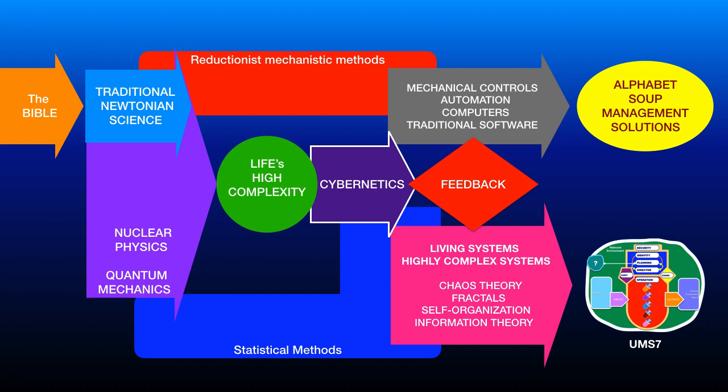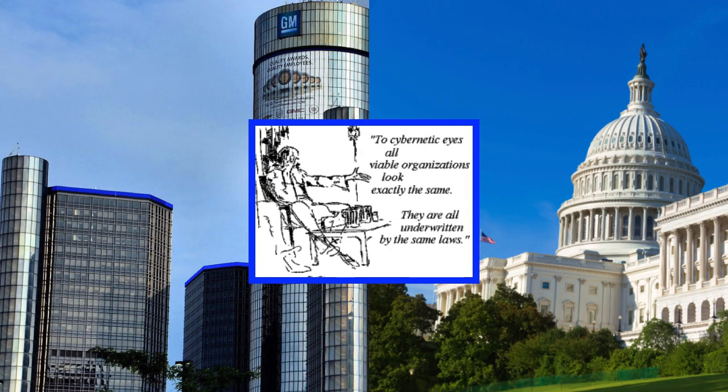I suggest that language is UMS-7, a more user-friendly version of Stafford Beer's viable system model. Only then will corporations and nation-states begin to operate under real-time governance and management.